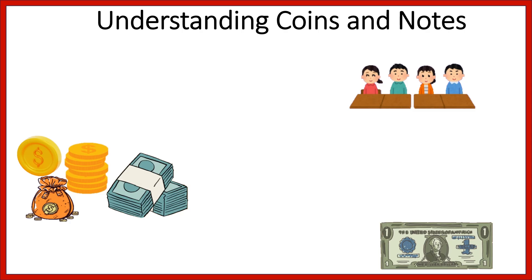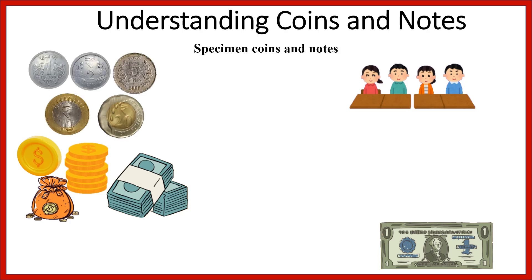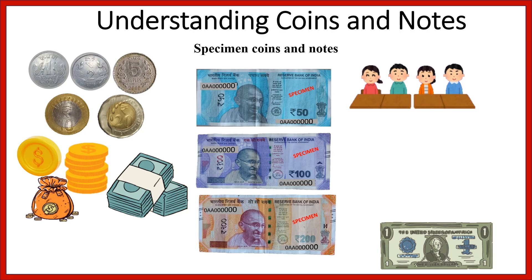Do you know how many different coins and notes we use in our daily life? Let's explore. Here are some specimen coins and notes from India. The year printed on each coin and note of the same denomination can be different — this indicates the year they came into circulation. Many things are printed on notes such as value, a picture, and sometimes a signature. Some coins are no longer in use because their value is very low, like 25 paisae and 50 paisae coins.